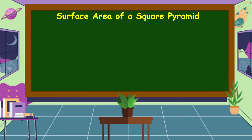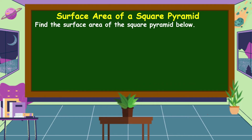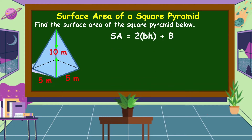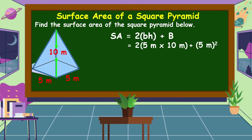Next, we're going to discuss the surface area of a square pyramid. Find the surface area of the square pyramid below with a height of 10 meters and a base of 5 meters. The formula is SA = 2 × base × height + area of the base. Let's substitute: 2 × 5 m × 10 m + (5 m)².